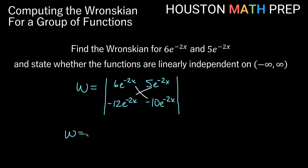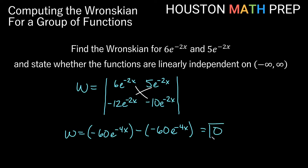The top-left to bottom-right diagonal gives -60e^(-4x). The other diagonal also gives -60e^(-4x). Subtracting — minus a negative becomes plus — we get -60e^(-4x) + 60e^(-4x), which equals 0. So we get a Wronskian of 0, meaning these are not linearly independent — they are linearly dependent. In second order equation terms, we would not call this a fundamental set of solutions.